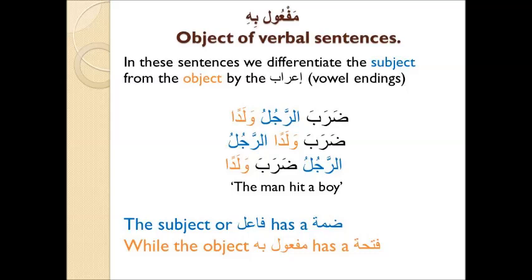In these sentences we differentiate the subject from the object by the إعراب, or vowel endings. So if you note in blue, the subject or فاعل has a ضمّة in whichever position it is found, while the object or مفعول به has a فتحة, again in whichever position it is found in the sentence.